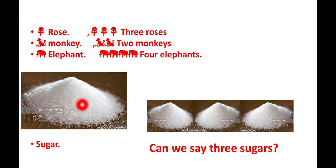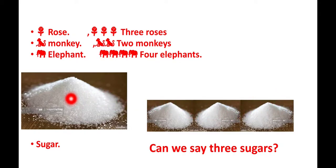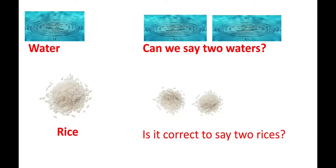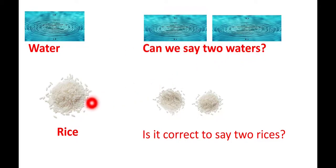Here is a picture — a heap of sugar. This is sugar. It is also a noun, but here you see three heaps of sugar. Can we say sugars? Is it correct to say sugars? No. This is sugar and whatever it is, it is sugar. We have to say sugar — there is no plural form for sugar. Here is water — can we say two waters? No, we should not say two waters. Water has no plural form. Here, one heap of rice — shall we say two rices? No. I have to say rice only. There is no plural form for rice.